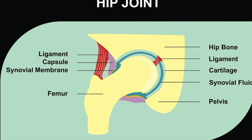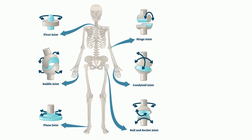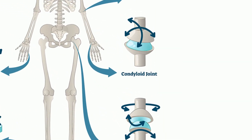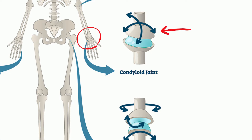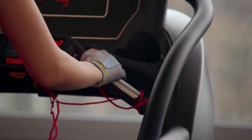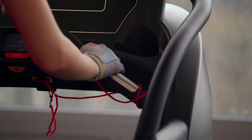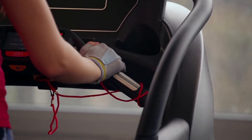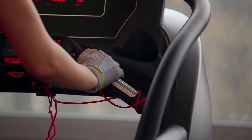Basically, you take a ball and fit it into this socket. A condyloid joint consists of an oval-shaped end of one bone fitting into a similarly oval-shaped hollow of another bone. This type of joint allows the joint to move both side to side and up and down. An example of this joint is found at your wrist.